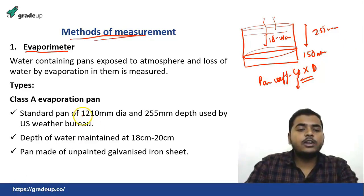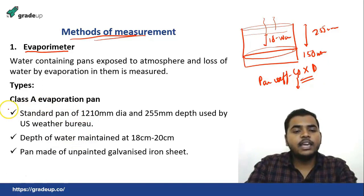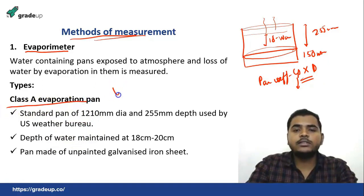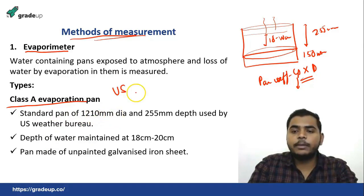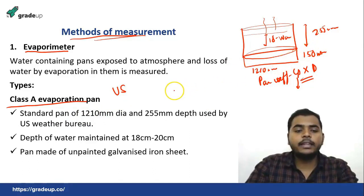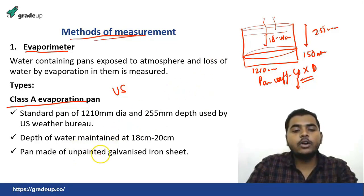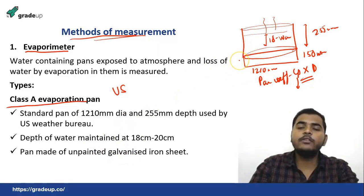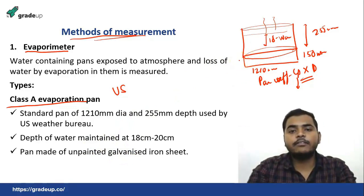There are two types of pan. Class A evaporation pan is used by the US Weather Bureau. It consists of a standard pan of 1210 mm diameter, 255 mm depth, with water maintained at 18 to 20 cm, and the pan is made of unpainted galvanized iron sheet to prevent rusting.